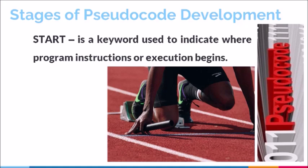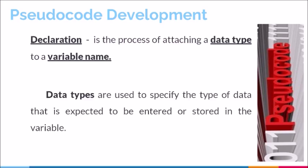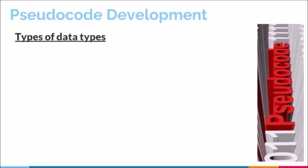After start, the next thing on the list is declaration. Declaration is the process of attaching a data type to a variable name. We need to pay attention to two key terms in this definition: the first is data type, and the second is variable name. Data types are used to specify the type of data that is expected to be entered or stored in variables. A data type is classified based on being part of a specific category, and there are two main categories where data types are normally classified.